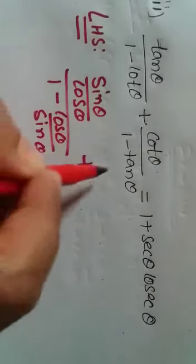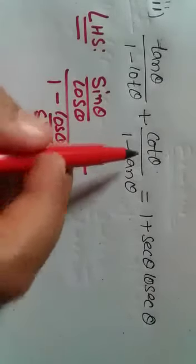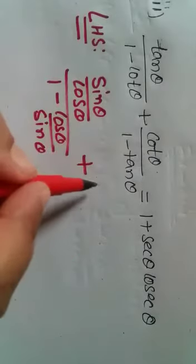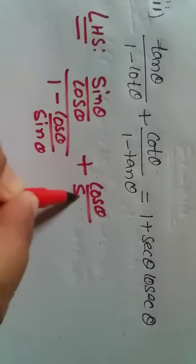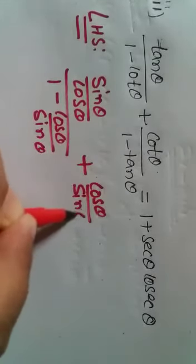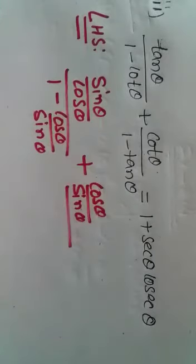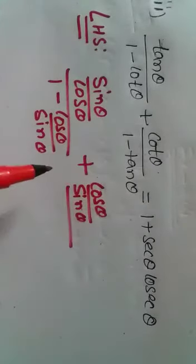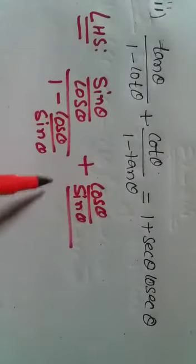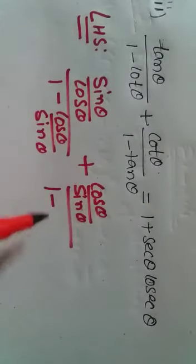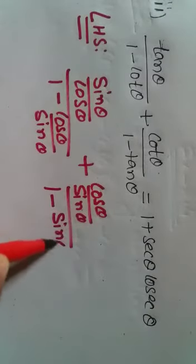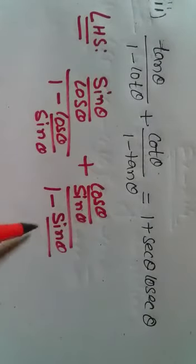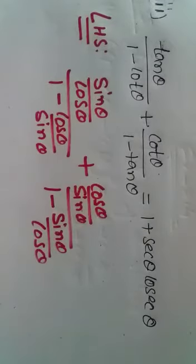Similarly, cot θ can be written as cos θ/sin θ, divided by 1 minus tan θ, which is written as sin θ/cos θ.